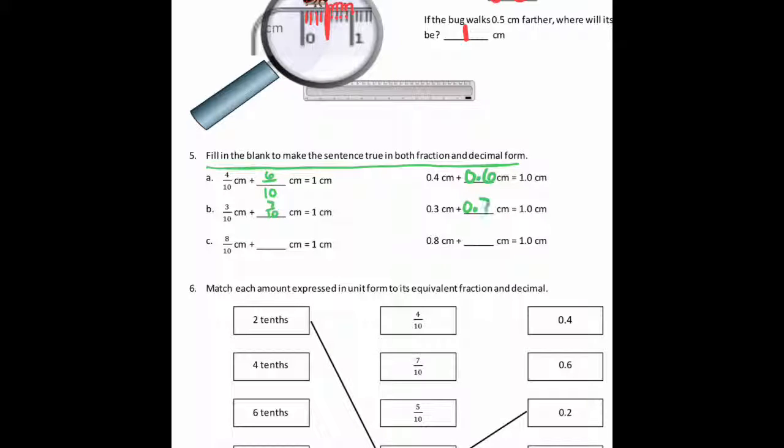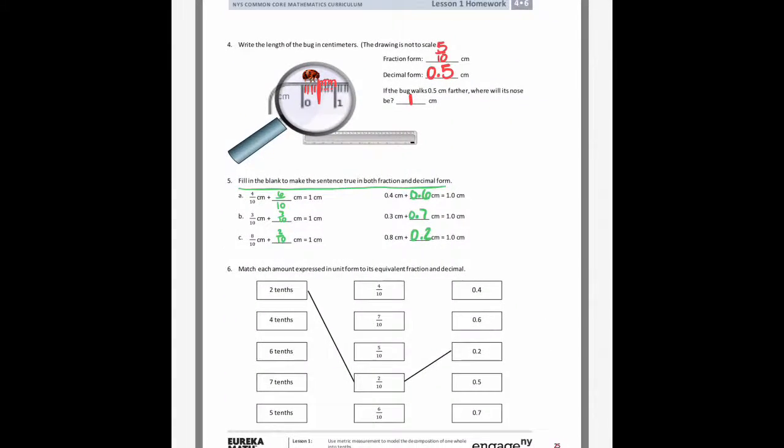Here, 3 tenths plus 7 tenths would give you 1, or 0.3 plus 0.7. And here, 8 tenths plus 2 tenths would give you 1, just like 0.8 plus 0.2 gives you a whole.